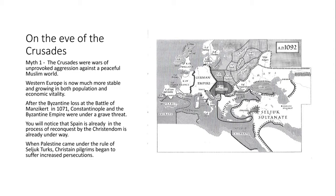Spain was already under Christian reconquest — formerly Christian territory taken by the Muslims. The Byzantine emperor called on the pope to help reconquer and protect Christian lands in the east. Christian pilgrims were being persecuted in the Holy Land. So this was not unprovoked aggression, and it was not an attack on a peaceful Muslim world.